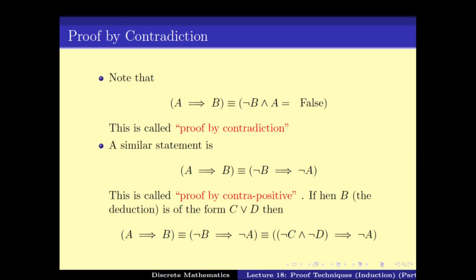Then there was the proof by contradiction. The idea is that instead of proving A implies B, one can prove that not B and A is false. Sometimes this different way of looking at the problem is easier to solve. Another technique is instead of proving A implies B, one proves that not B implies not A. These are equivalent statements, and this can be useful particularly when B is of the form C or D.